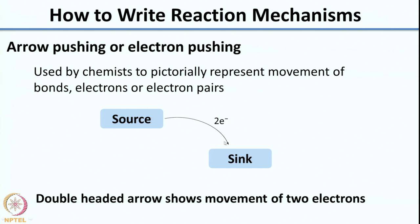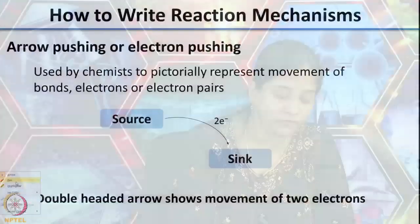Arrow pushing is used by chemists to pictorially represent movement of electrons or electron pairs. The convention is that the arrow starts from a source — the electron-rich species — and ends at a sink, the electron-deficient species. Double-headed arrows show 2 electrons moving, used for polar reactions. Single-headed arrows, also called fish hook arrows, are used for movement of single electrons.